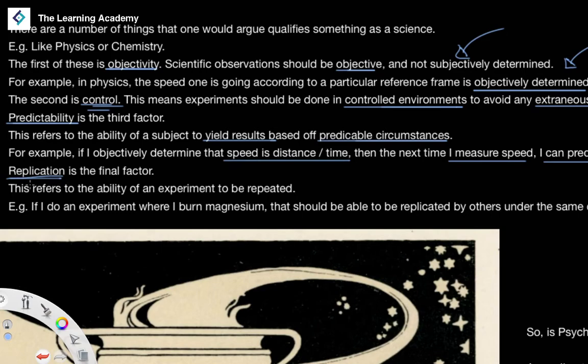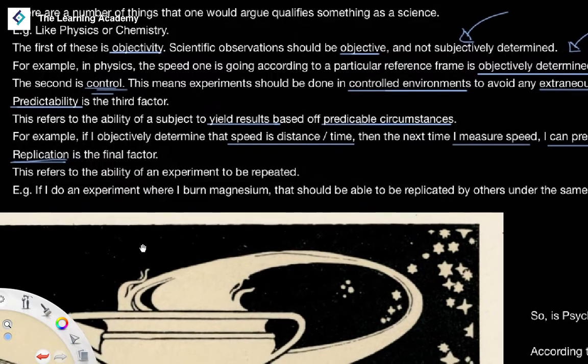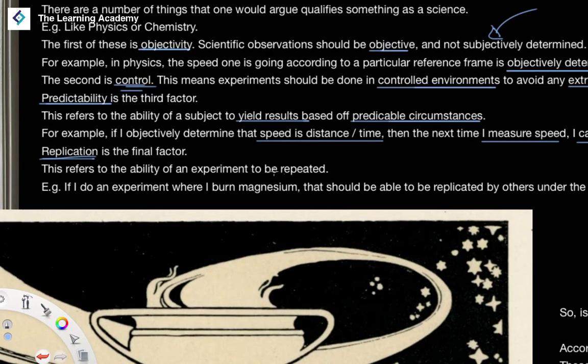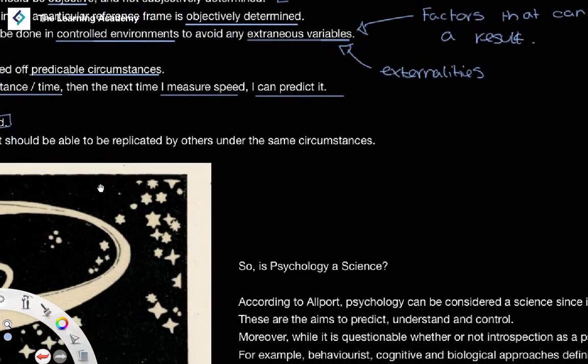The final factor within science is the concept of replication. And this refers to the ability of an experiment to yield similar or the same results if repeated over and over again.